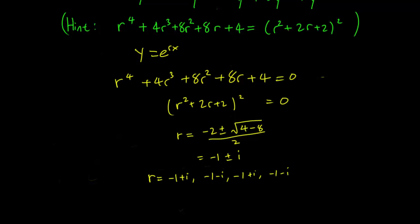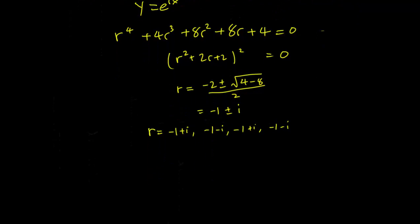So we have these four roots and they are repeated twice. What we have to do is write y₁ = e^(-x)cos(x) and y₂ = e^(-x)sin(x).